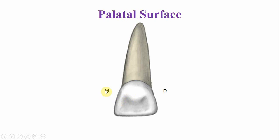These are the marginal ridges — this is the mesial marginal ridge and this is the distal marginal ridge. The marginal ridges are more prominent than on the permanent teeth. This fossa is known as the palatal fossa, sometimes referred to as the lingual fossa. The root is narrower on the palatal side, so you can see part of the distal and mesial surfaces when looking at this tooth from the palatal surface.